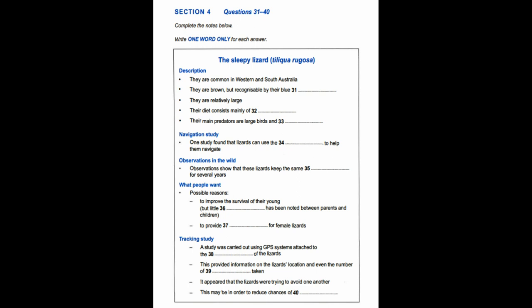I'll start with a general description. Sleepy lizards live in Western and South Australia where they're quite common. Unlike European lizards which are mostly small, green and fast-moving, sleepy lizards are brown. But what's particularly distinctive about them is the color of their tongue, which is dark blue, in contrast with the lining of their mouth which is bright pink. They're much bigger than most European lizards.